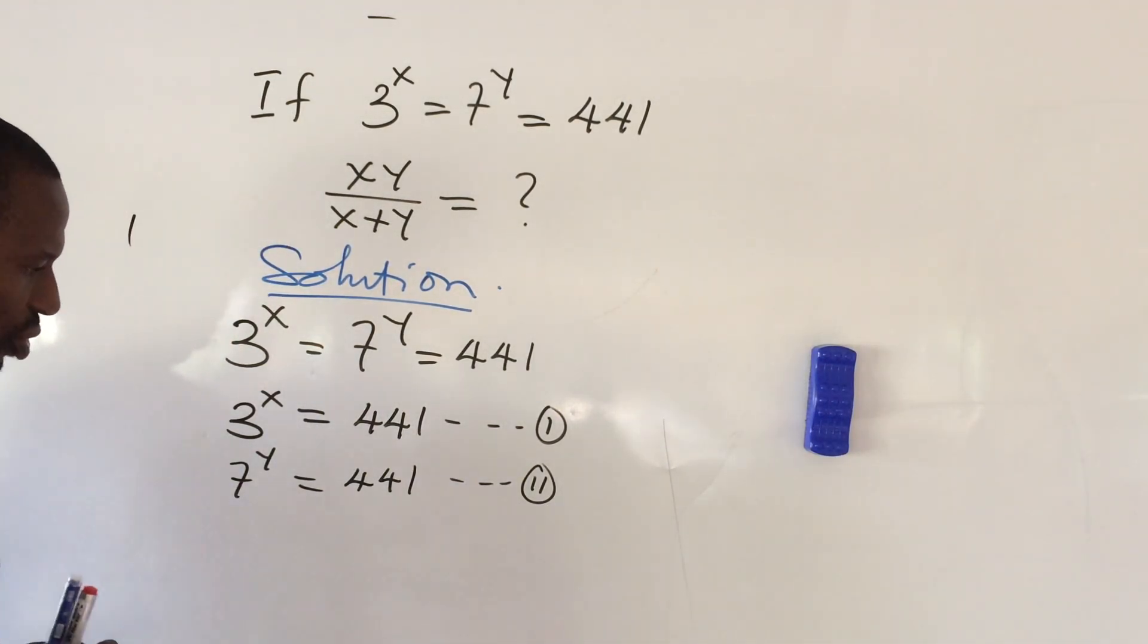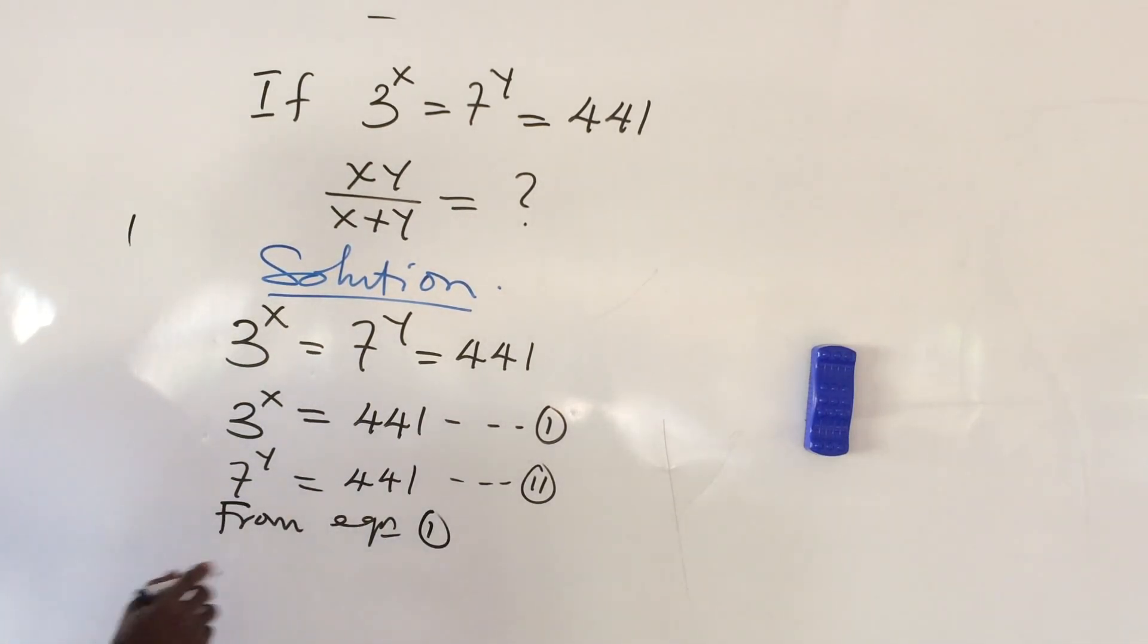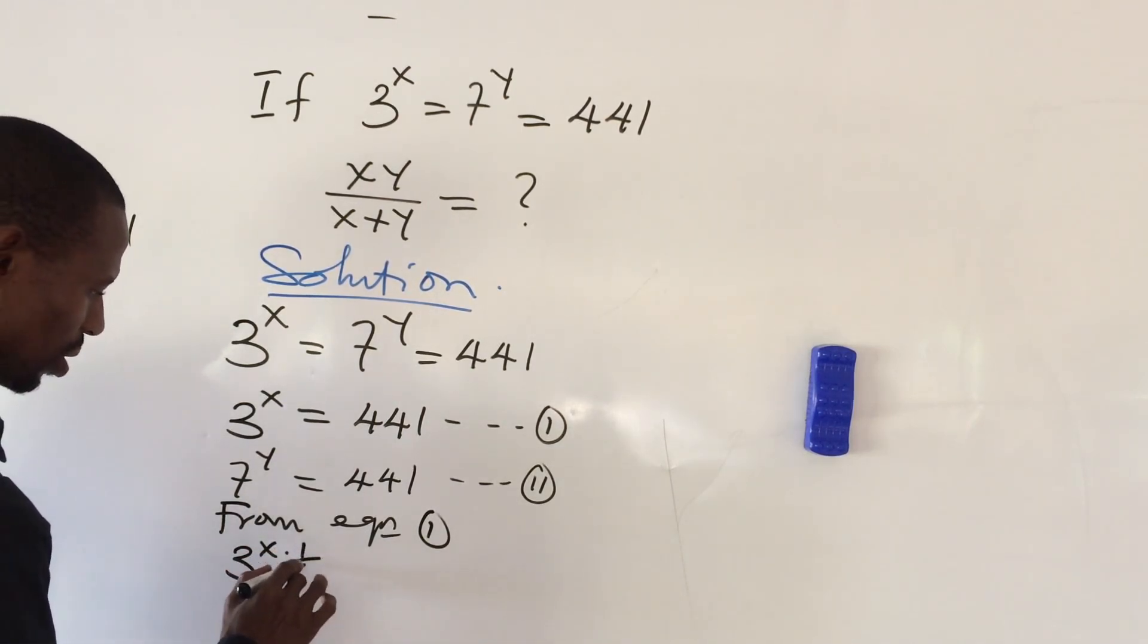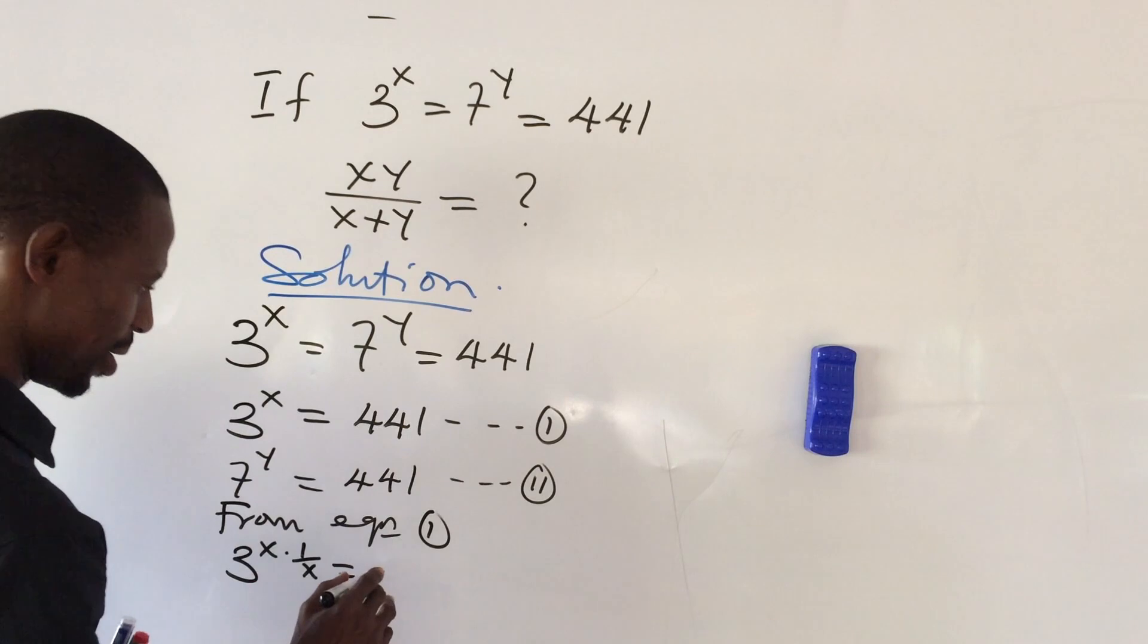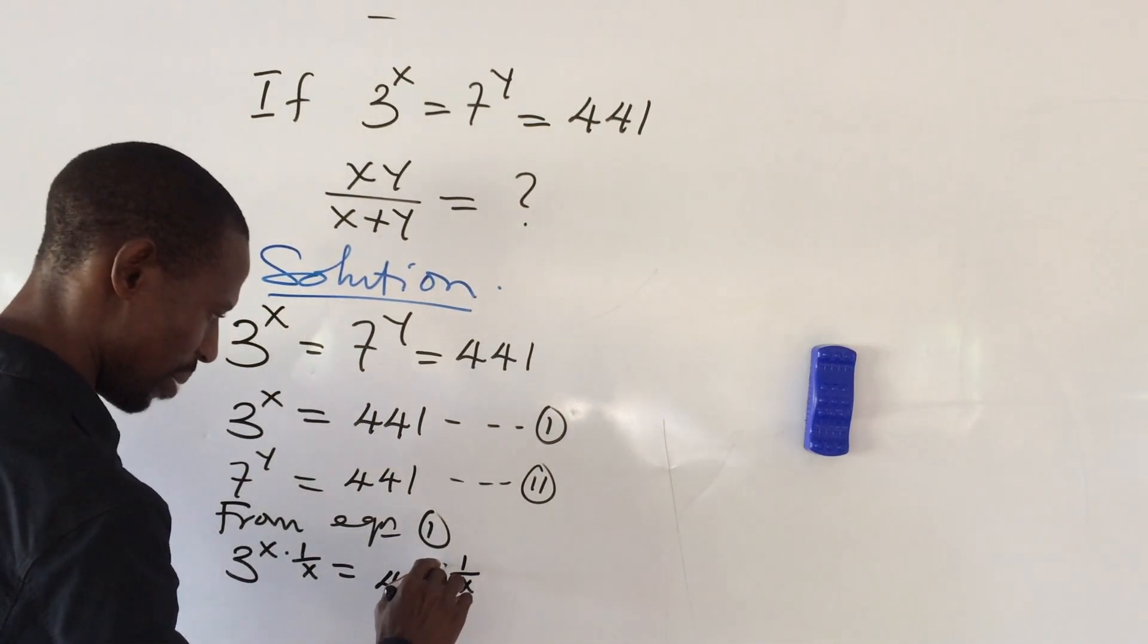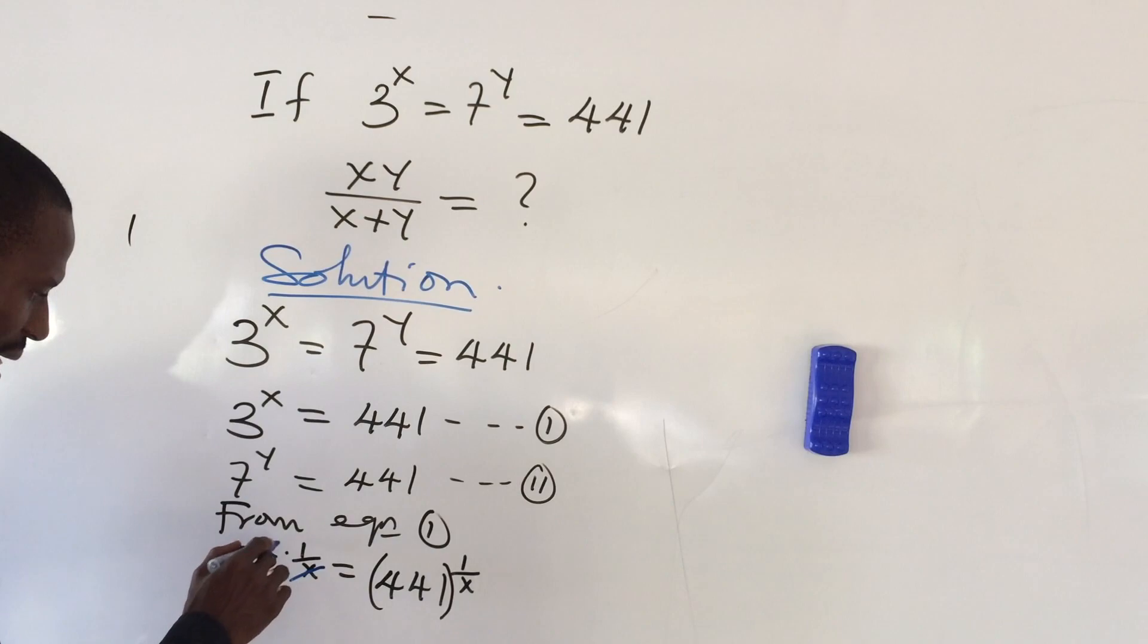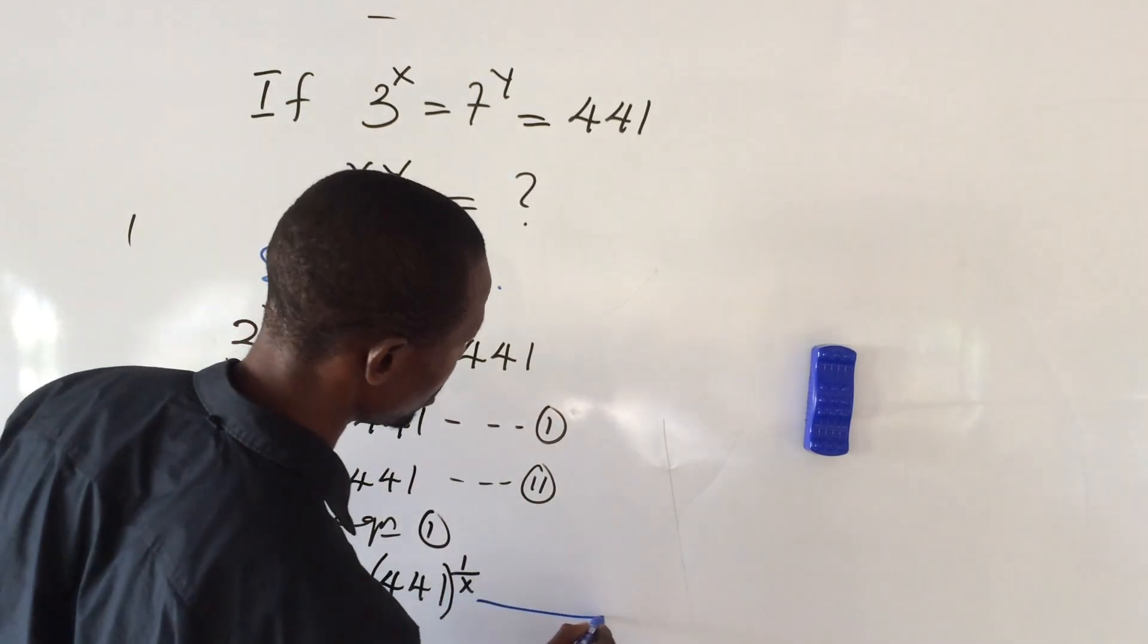This will now give us from equation 1, we now have this to be 3 to the power of x times 1 all over x equal to, whatever we do to the left-hand side, we must do it to the right-hand side. So this will also give us 441 to the power of 1 all over x. Now we can put this in brackets. Then from here, you're going to discover that x will cancel x.